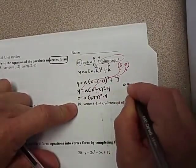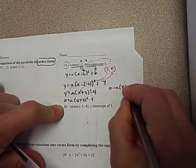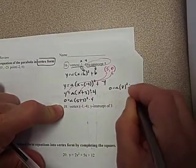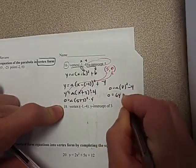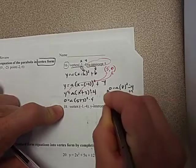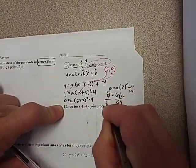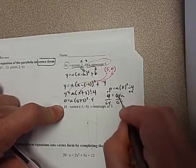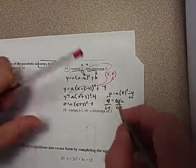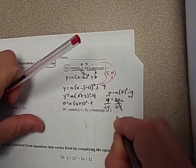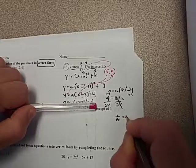So I have 0 equals a. So 5 plus 3 is 8. So I have 0 equals 64a, and I'm going to go ahead and move that 4 over to this side. So that's actually 4 equals 64a, and I'm going to divide by 64. And now this can simplify. You can divide both parts of this by 4. And so you get 1 over 16 equals a.